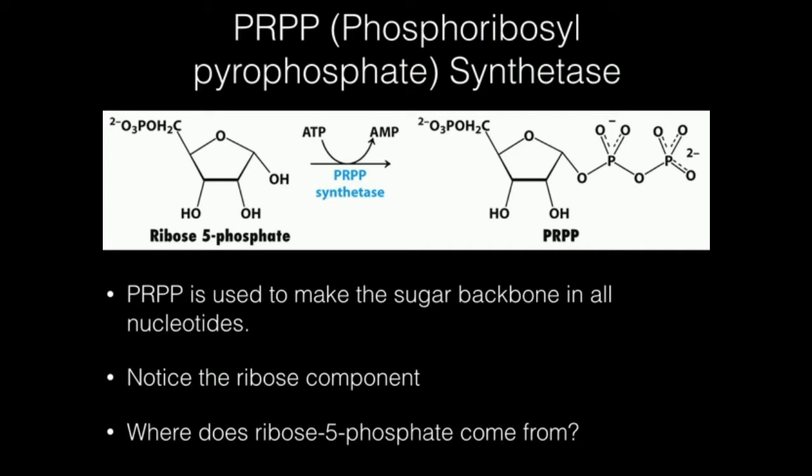It also turns out PRPP synthetase is an allosteric enzyme. In a couple of videos, we're going to talk about the regulation of all of purine synthesis and see how this enzyme in particular is regulated. We get ribose 5-phosphate from the pentose phosphate shunt, we pyrophosphorylate it and make PRPP, and that's going to be used as the starting point for both purine and pyrimidine synthesis.